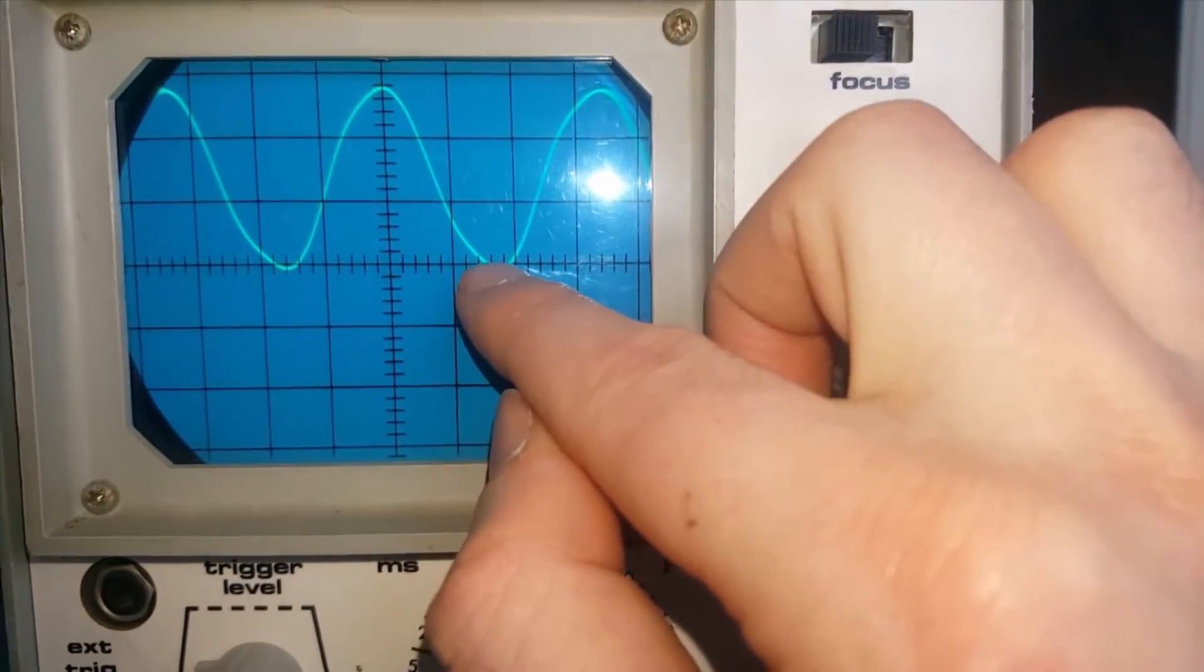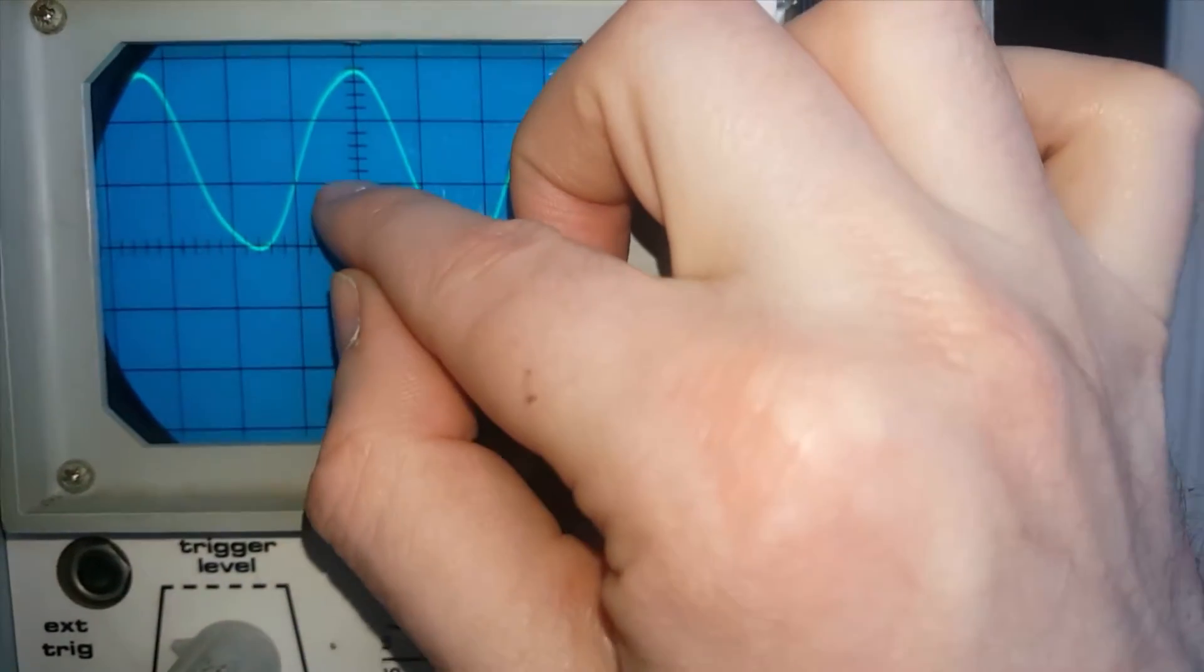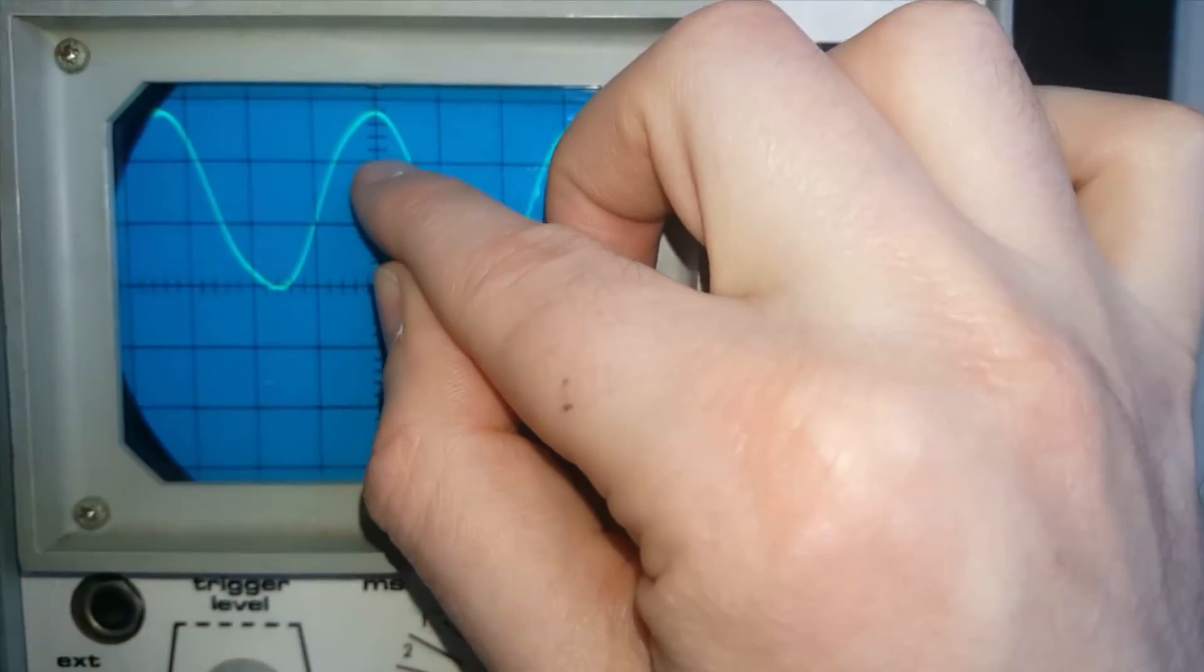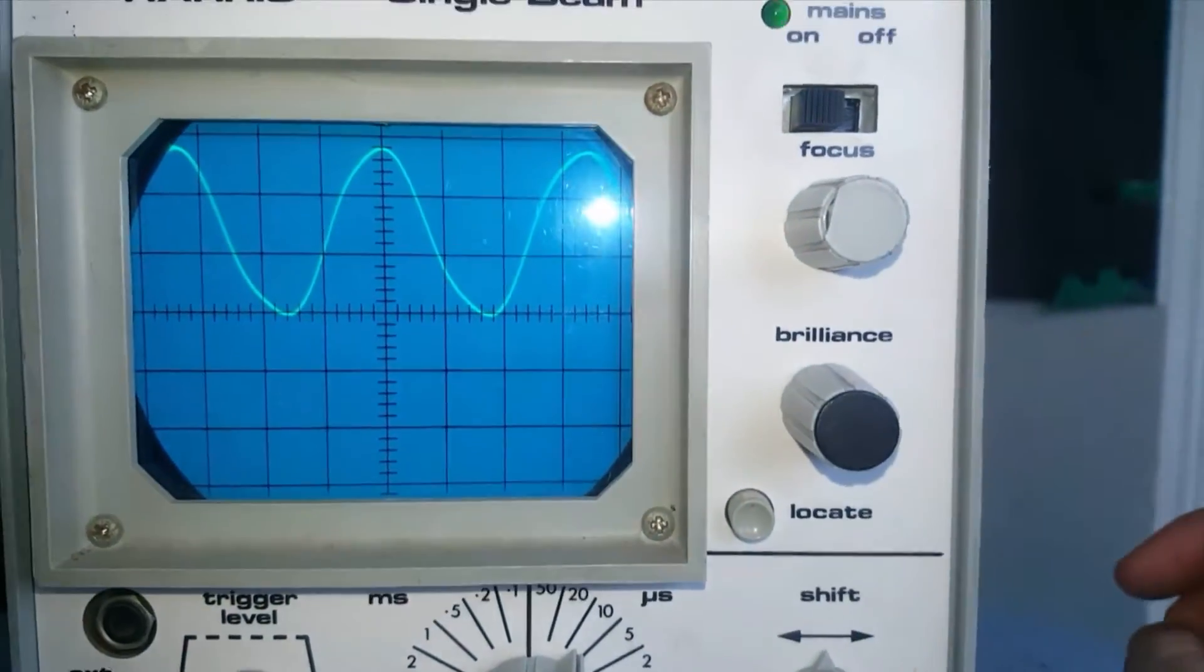Position our wave so the bottom is touching that line and the top is up here. We can see that that's one centimetre, two centimetres, around about 2.8 centimetres.